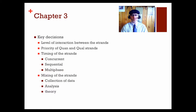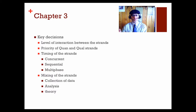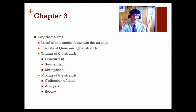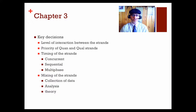Third, you want to look at the timing of the strands. In some cases you have quantitative or qualitative first, then the other type — that's called sequential, one happens after the other. Another type is called concurrent, where your quantitative and qualitative happen essentially at the same time: you're collecting data at the same time, doing analysis at the same time, and then might bring those together at the results and interpretation stage. The level of interaction could occur at data collection or at results.